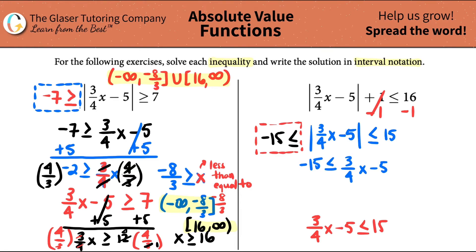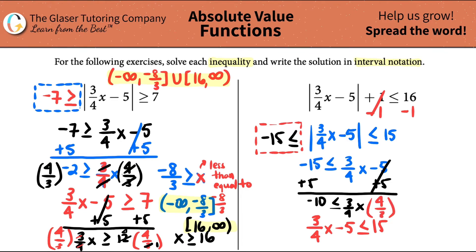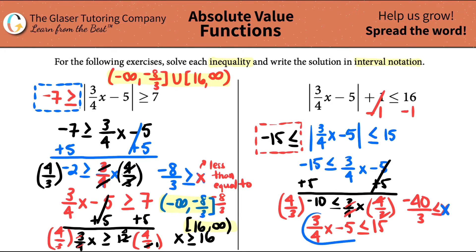Once you write the two equations you can drop the absolute value sign. So: negative 15 is less than or equal to 3/4x minus 5, and 3/4x minus 5 is less than or equal to 15. Let's do the first one — add 5 to both sides: negative 15 plus 5 is negative 10, which is less than or equal to 3/4x. Multiply by 4/3 — the 4s and 3s cancel out. That gives negative 40/3, which can't be simplified. So negative 40/3 is less than or equal to x, meaning x is greater than or equal to negative 40/3.